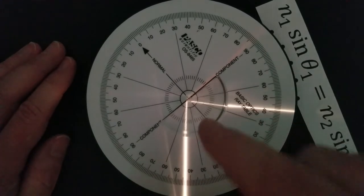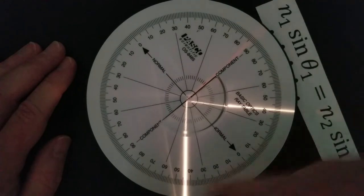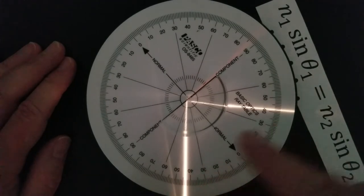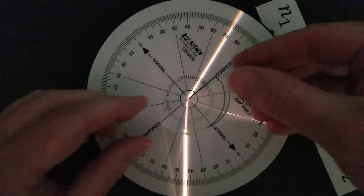So figure out the index of refraction of this solid. And if you use the angle in air to be 90 degrees, figure out what this angle should be. We can measure it right here. But you see at this point, light no longer escapes unless I bump it.